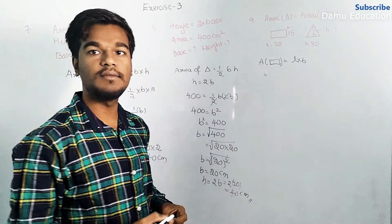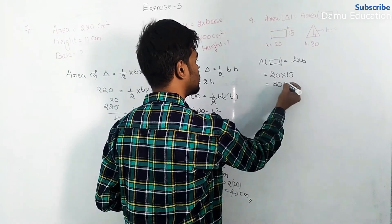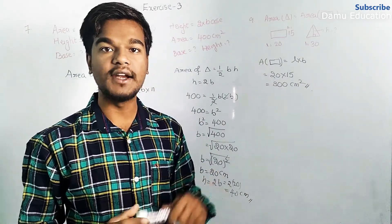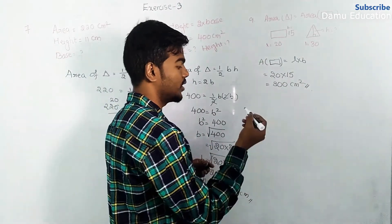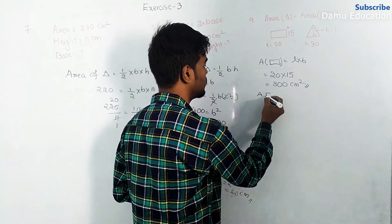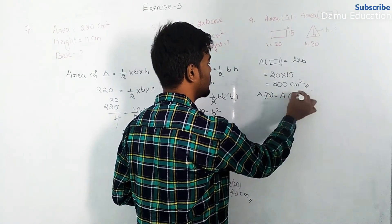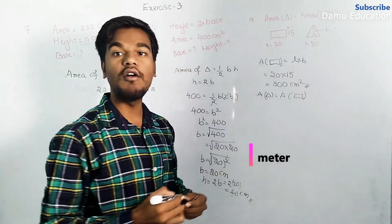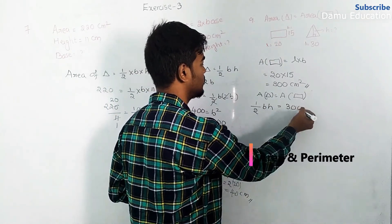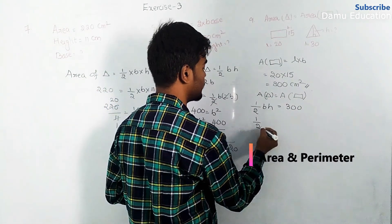First we calculate the area of the rectangle using the given measurements. Area of rectangle equals length into breadth, so area equals 20 into 15, which is 300 centimeter square. Since the area of the triangle equals the area of the rectangle, area of triangle equals 300 centimeter square.